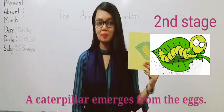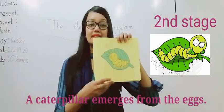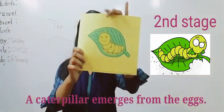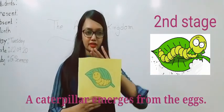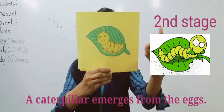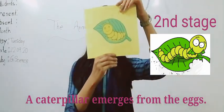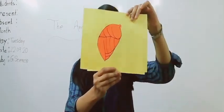The second stage is caterpillar. In this stage, the caterpillar eats many leaves. Once it is big enough, it stops eating and it turns into a chrysalis.